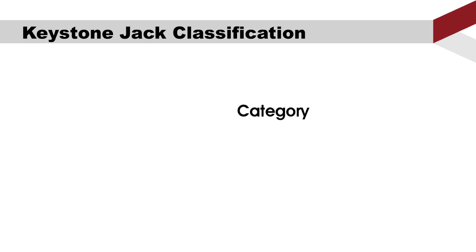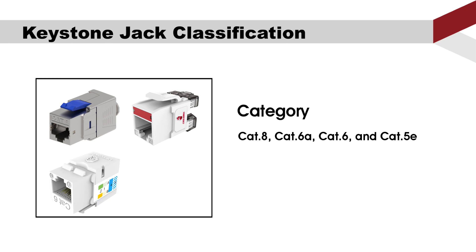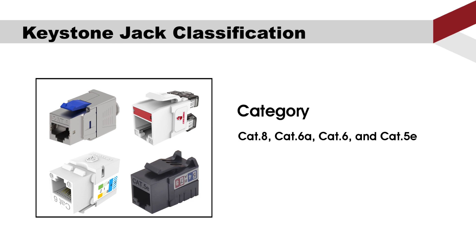First, by category. The Keystone Jacks can be classified into K8, K6A, K6, and K5E. Each of them can reach a different frequency.